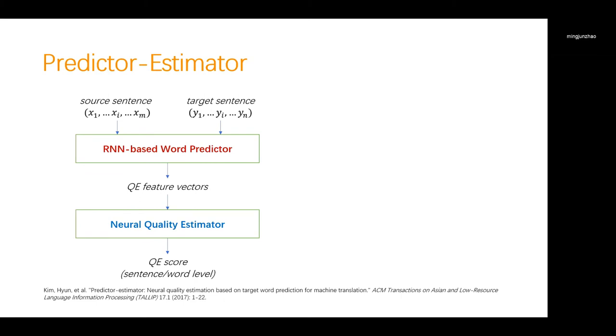Deep learning methods have also been applied to quality estimation. The recent predictor and estimator framework for QE has drawn much attention, which consists of an RNN-based word prediction model that extracts latent features from the input, and an estimator that provides quality evaluation based on the extracted features. Different from traditional methods, the RNN-based word predictor is firstly trained on large amounts of parallel data, so that meaningful translation features can be learned. And then, the neural quality estimator is trained from the QE data to map the features extracted from the predictors to the QE score.